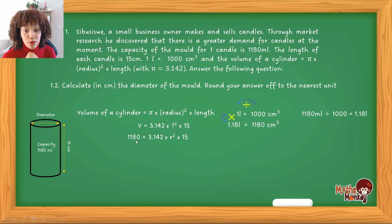So have a look at this formula now and make sure that you know where all these values come from. This 1180 is the volume. The 3.142 is what they ask us to use for pi and then times radius squared multiplied by 15. And the 15 is now the height or the length.